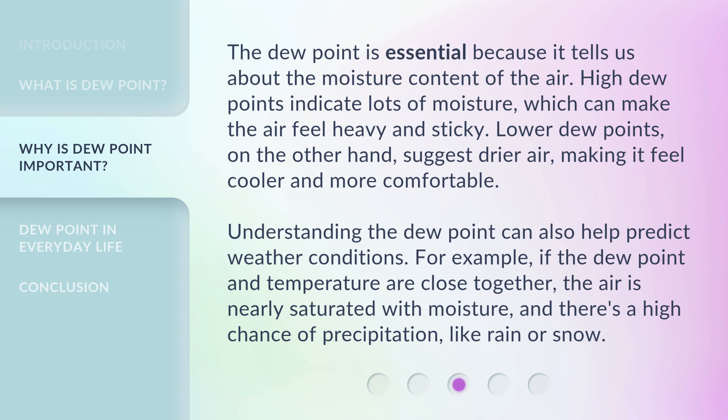Understanding the dew point can also help predict weather conditions. For example, if the dew point and temperature are close together, the air is nearly saturated with moisture, and there's a high chance of precipitation, like rain or snow.